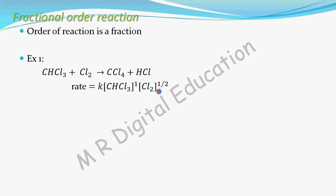CHCl3 plus Cl2 gives CCl4 plus HCl. So rate equation for this reaction can be written as rate equal to K into concentration of CHCl3 to the power 1 into concentration of Cl2 to the power 1 by 2.